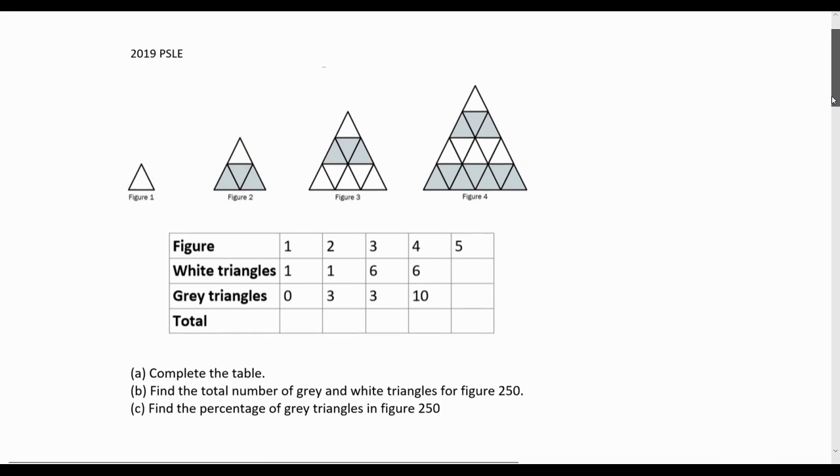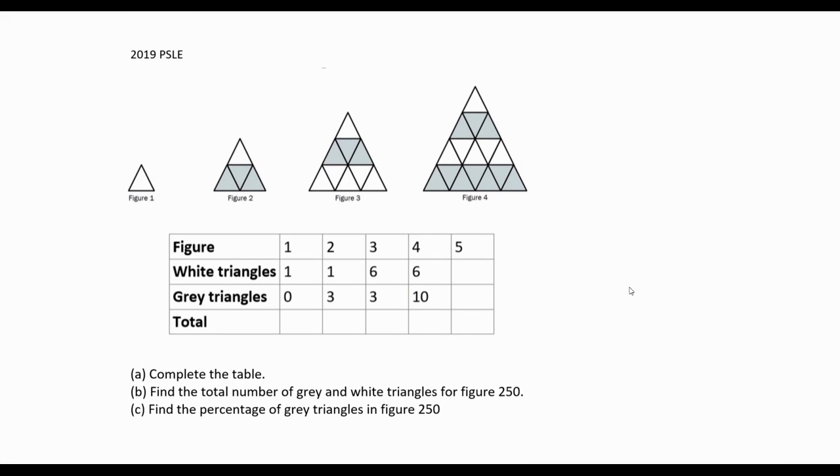The first pattern variance is from the 2019 PSLE math paper, but it requires us to complete the table. You can fill in the bottom row immediately because it's just a matter of adding up the grey and white triangles.